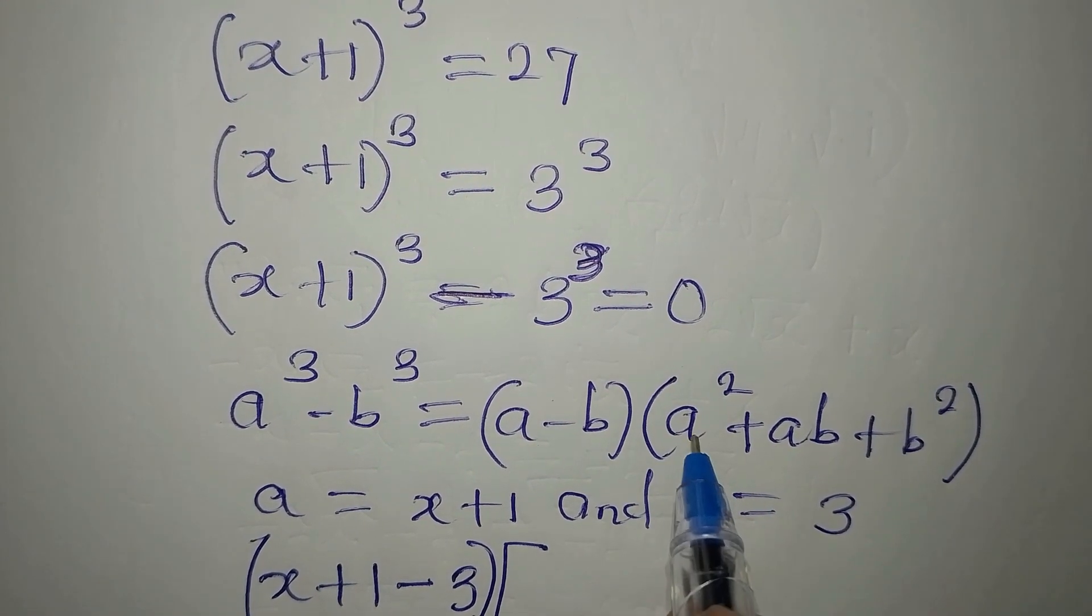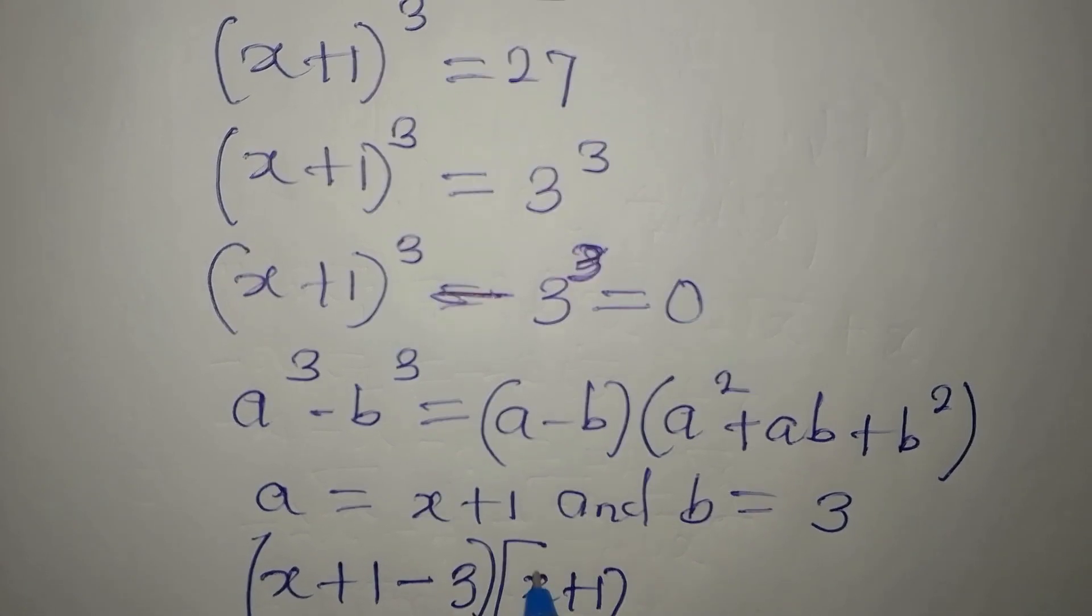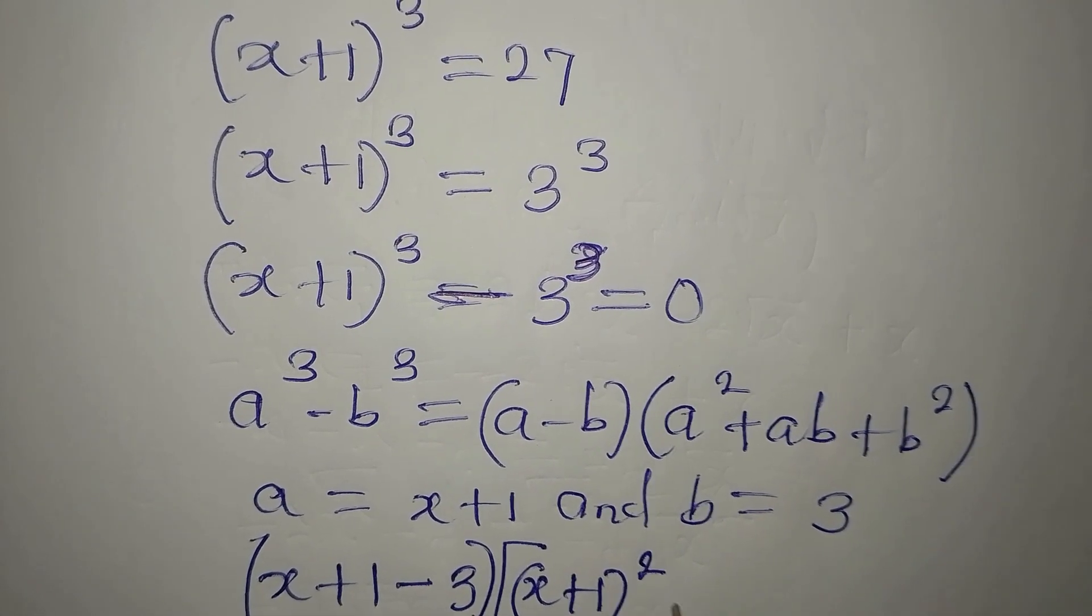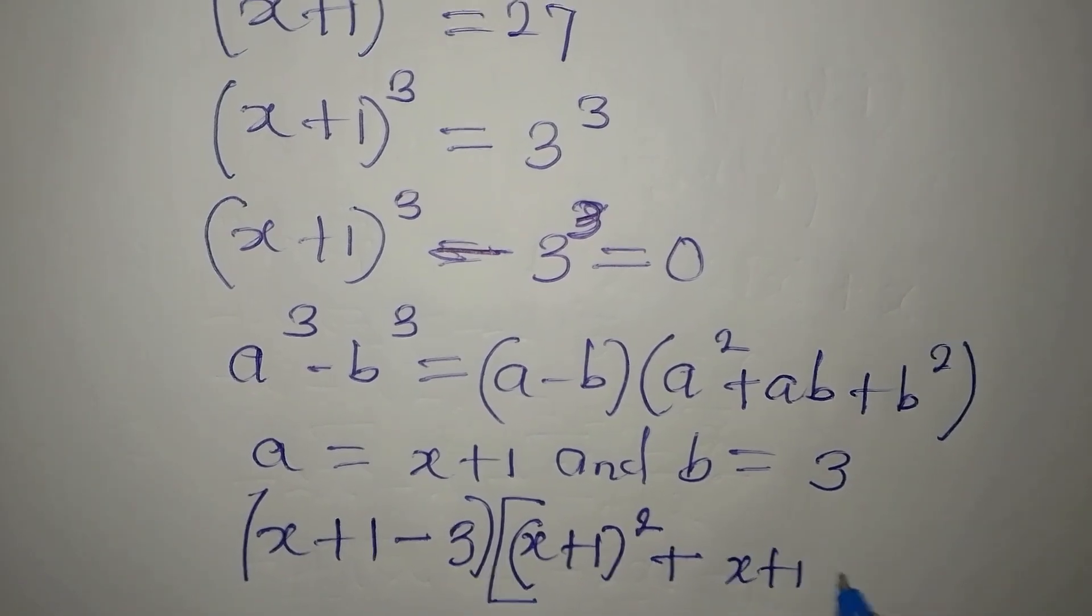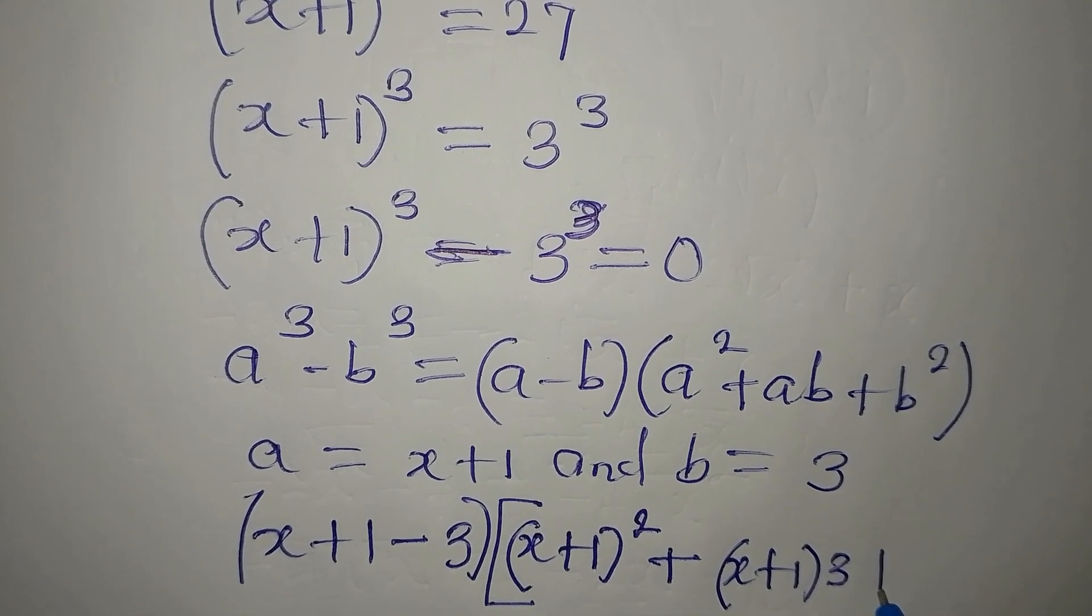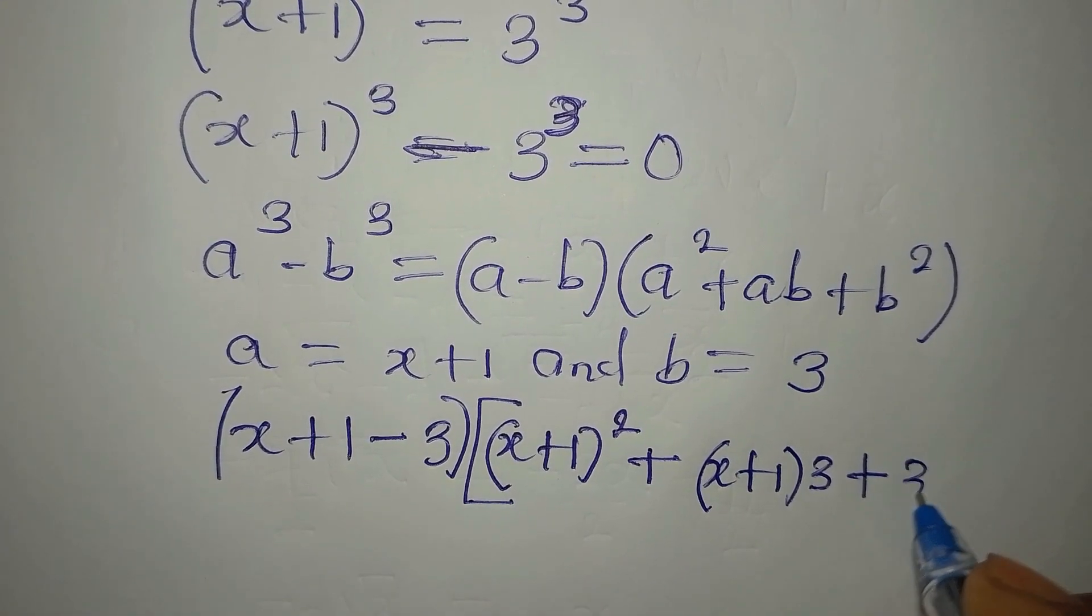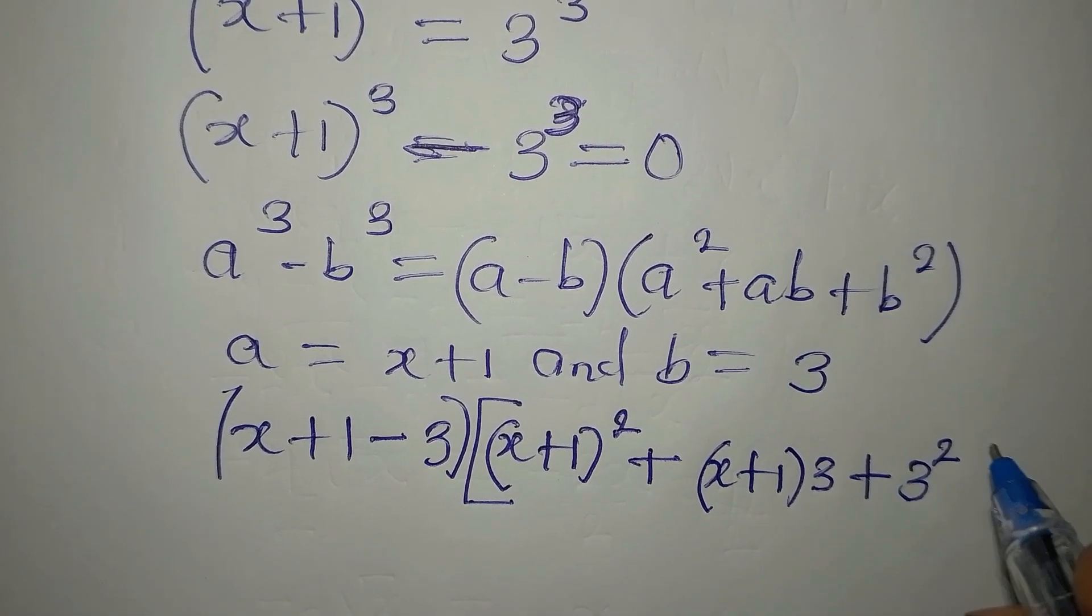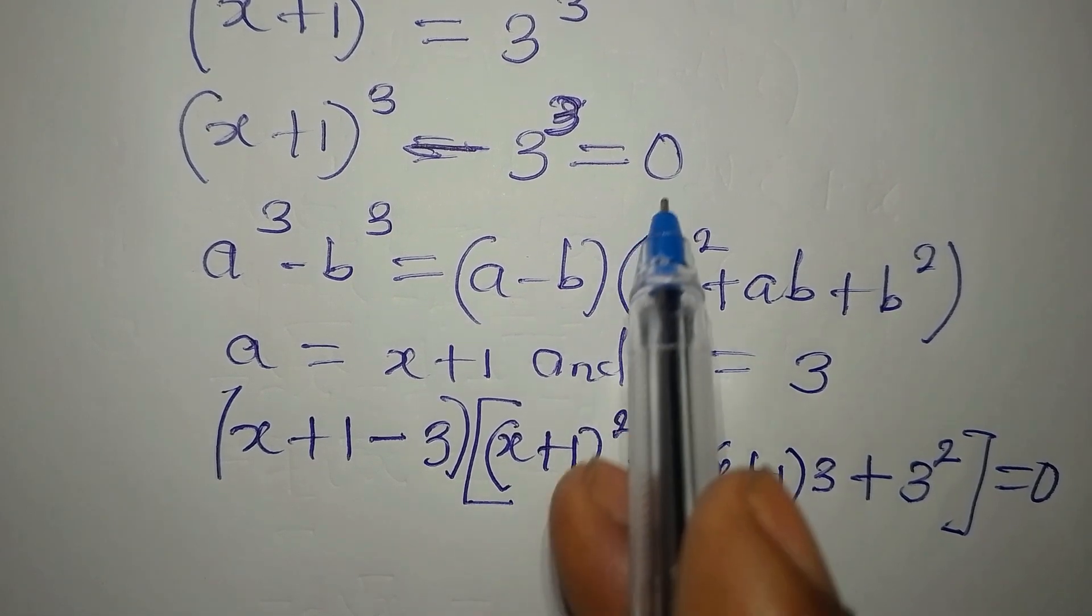Then in the second bracket, a squared becomes x plus 1 squared. Then plus ab, a is still x plus 1, then multiply by b, b is 3. Plus we have b squared which is 3 squared. Then everything is equal to 0 from there.